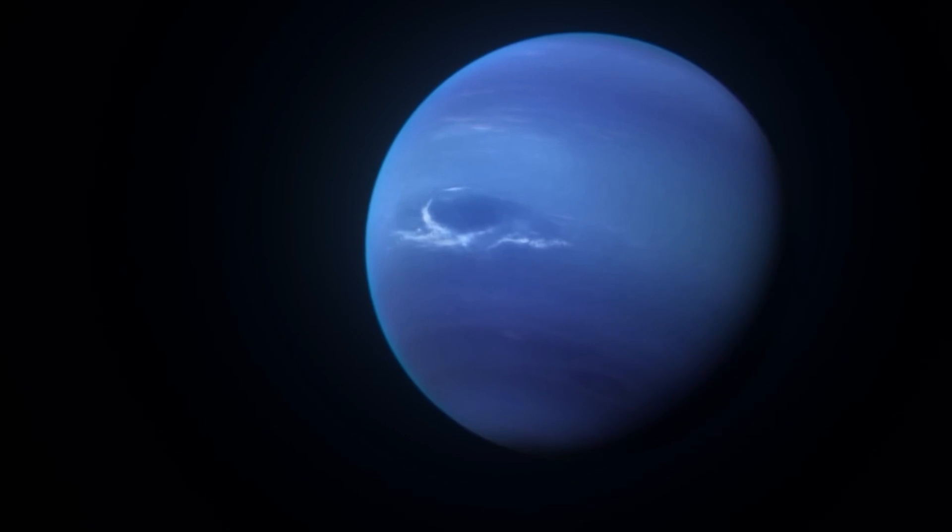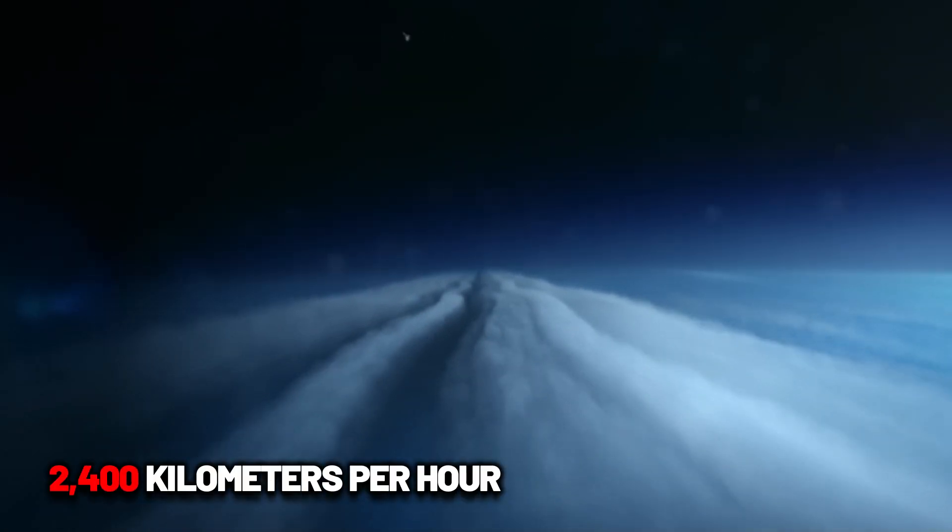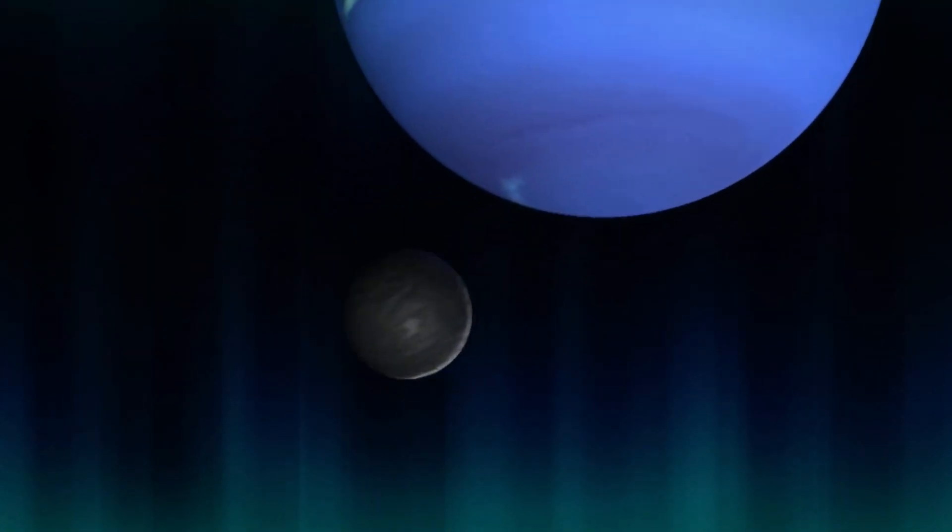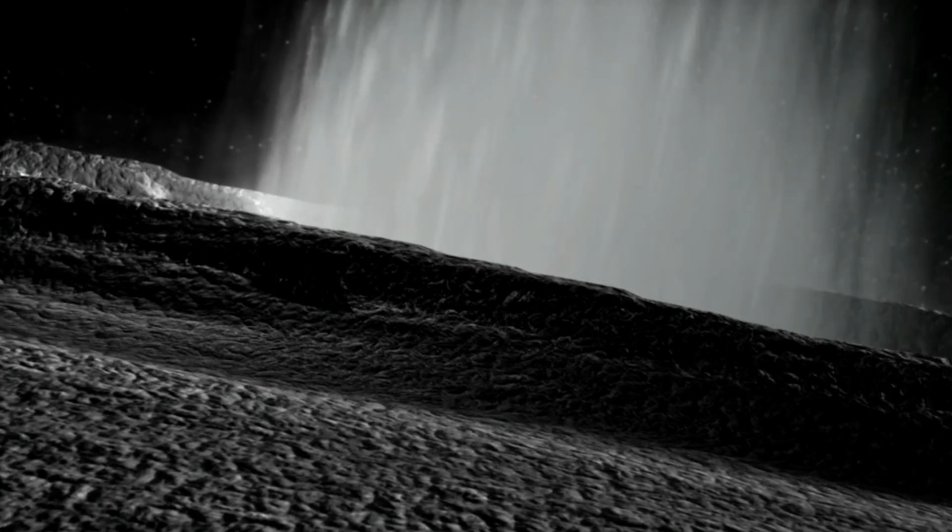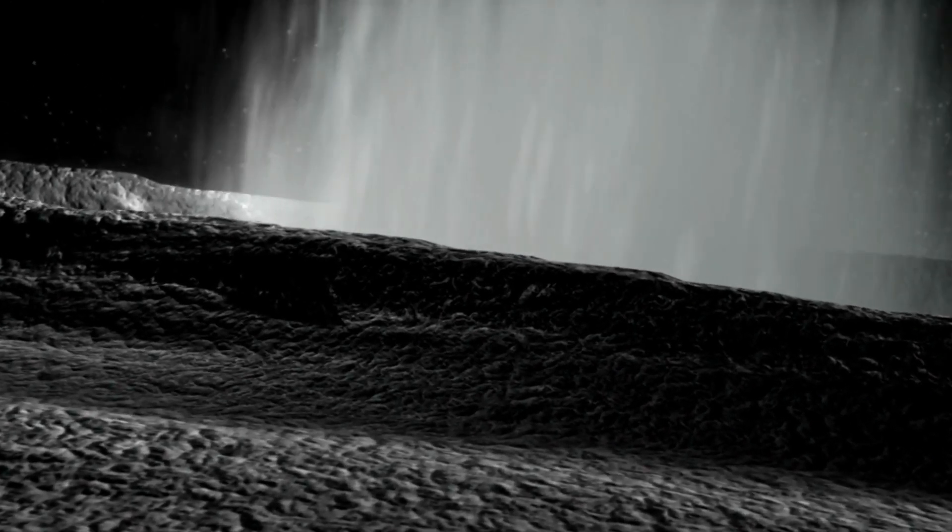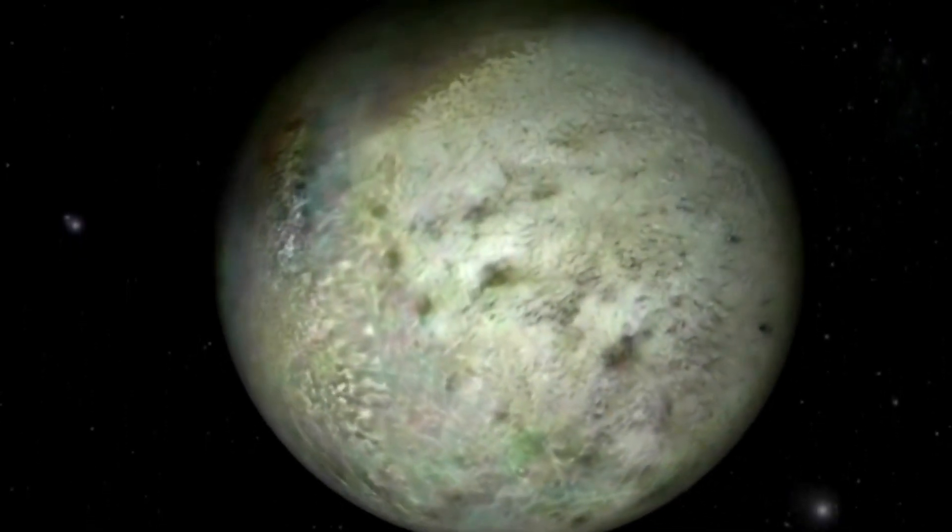Neptune, deep blue and wind-lashed, revealed the fastest recorded winds in the solar system, howling at 2,400 kilometers per hour. And circling Neptune was Triton, a moon so cold and distant it should have been inert. Instead, it was erupting geysers of nitrogen into the void, leaving dark trails on its icy surface.